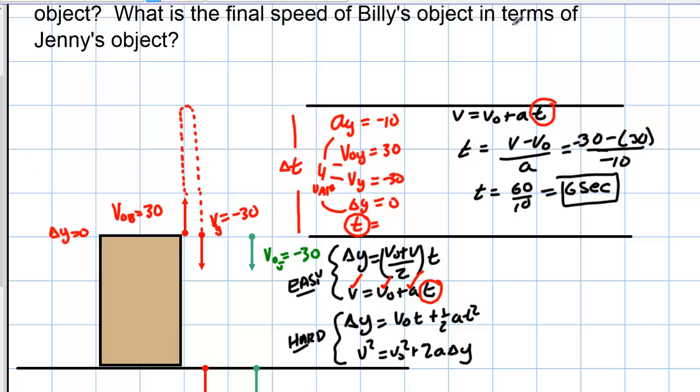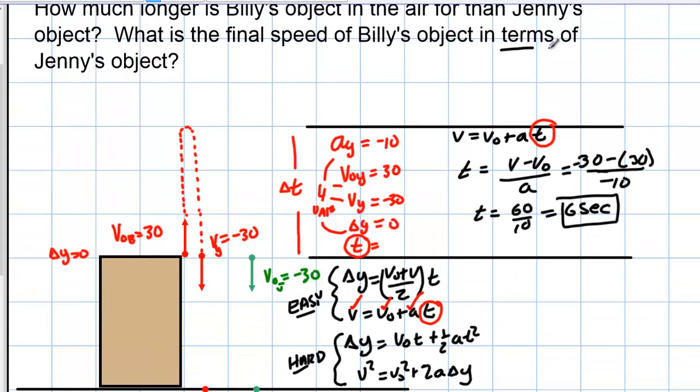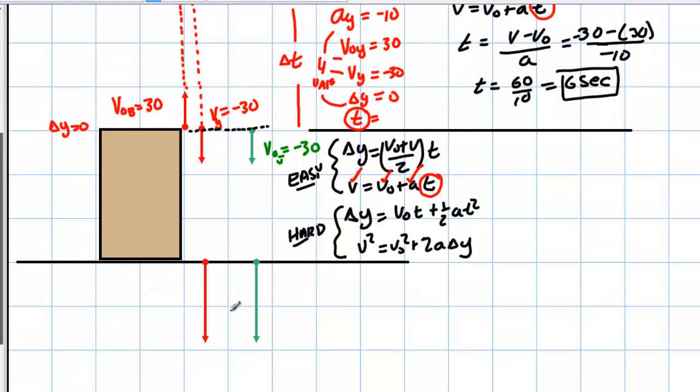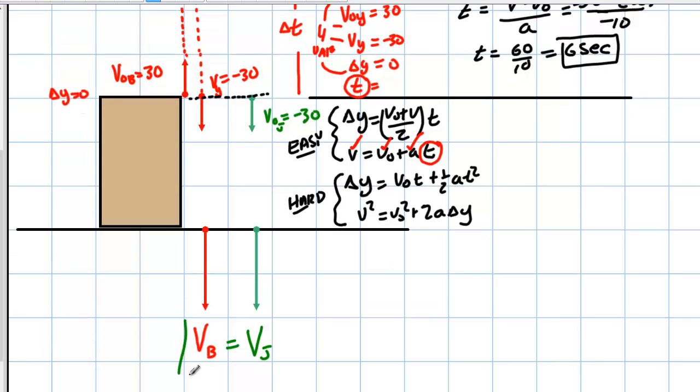Now, what's the final speed of Billy's object in terms of Jenny's object? In terms of means as one as a function of the other. Well, I told you before that from this point, Billy's speed is the same as Jenny's speed because it's symmetric. So, they're both going to accelerate at the same rate at that point. They have the same initial velocity. So, they have the same final velocity at this point. Okay. So, the final velocity of Billy is the same as the final velocity of Jenny. They're the same at that point. So, that answers the second part of that question for you.